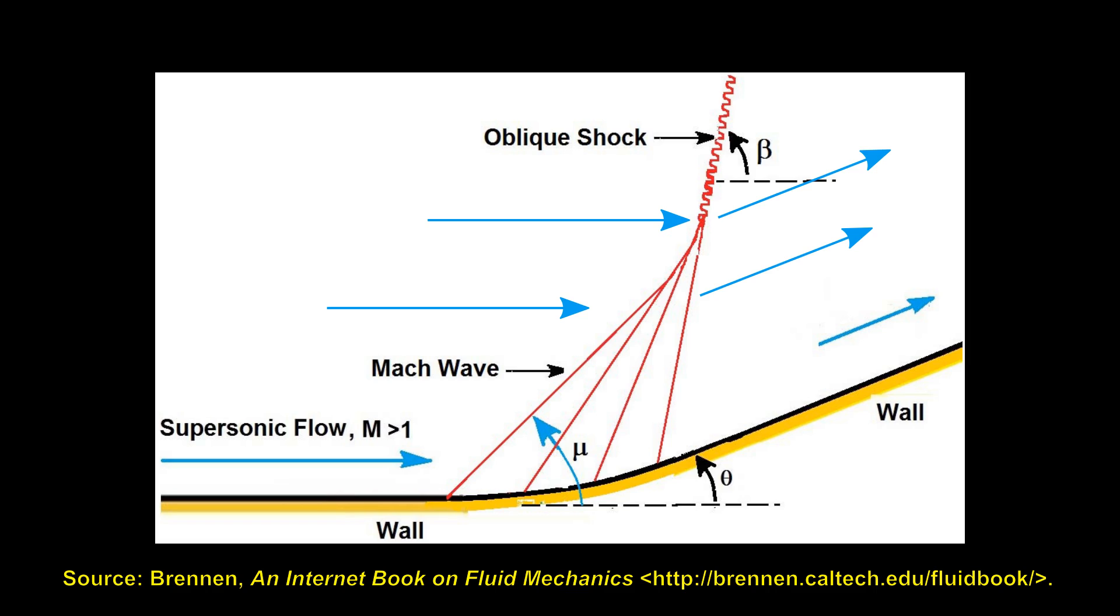Remember that in supersonic flows, the particles can't communicate back up the stream and warn the incoming particles that they will need to change direction soon. Instead, the particles continue straight until they collide with the deflected downstream flow. The particles pile up, this time creating an oblique shock.